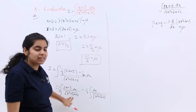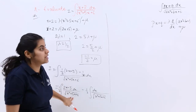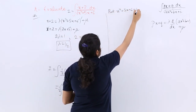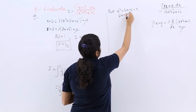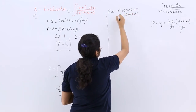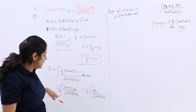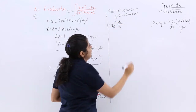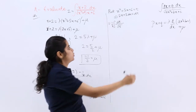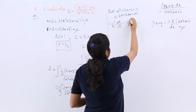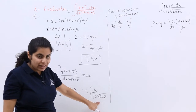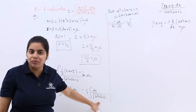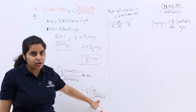For the first part, since 2x + 5 is the differentiation of x² + 5x + 6, we substitute t = x² + 5x + 6, giving dt = (2x + 5)dx. So the first integral becomes (1/2)∫dt/√t. For the second integral, dx/√(x² + 5x + 6), we use completing the square — a form we have already studied.